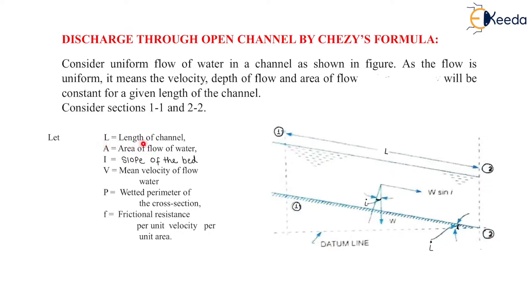L is the length of channel, A is the area of flow of water, I is the slope of the bed, V is the mean velocity of flow of water, P is the wetted perimeter of the cross section, and F is the frictional resistance per unit velocity per unit area.